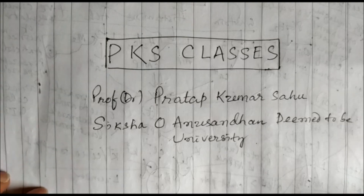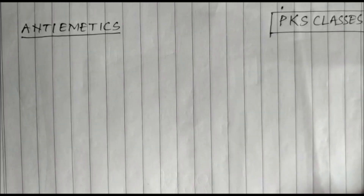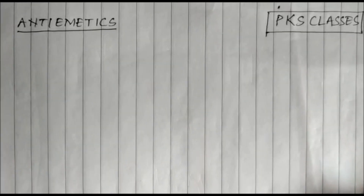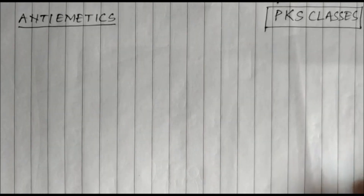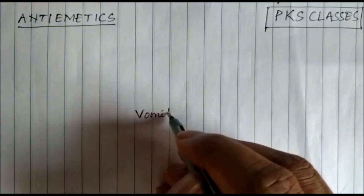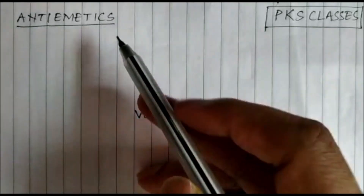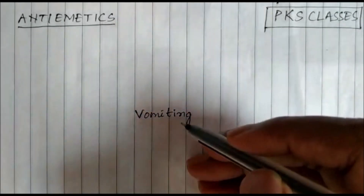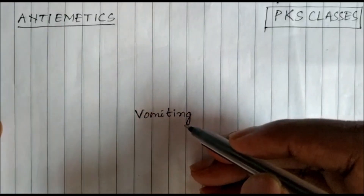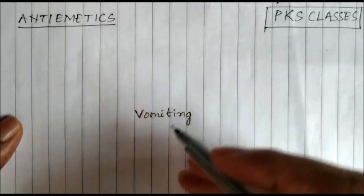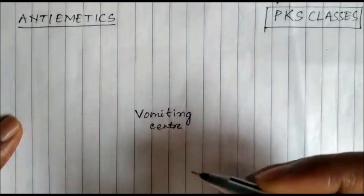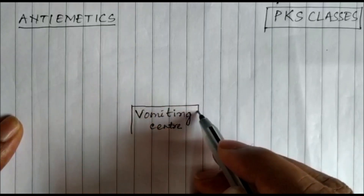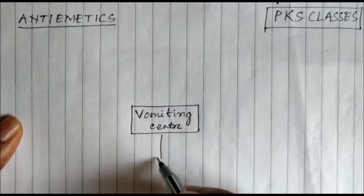Welcome to PK's classes. Today we will study anti-emetics. Anti-emetics are the drugs which inhibit emesis or vomiting. Emesis is nothing but vomiting, and it can be inhibited by anti-emetics. Vomiting is a reflex action to certain stimuli, and all these stimuli activate the vomiting center present in the medulla oblongata.